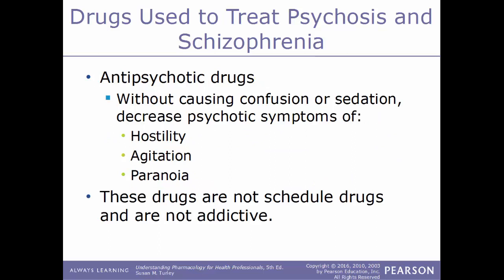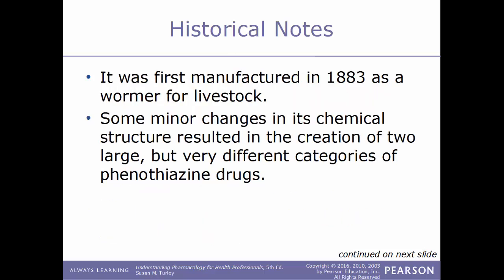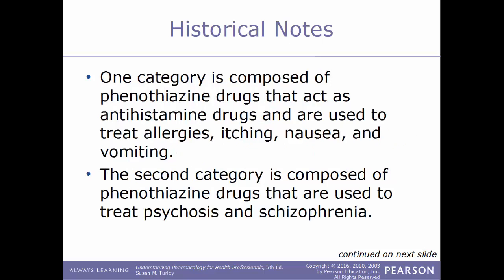Antipsychotic drugs decrease psychotic symptoms of hostility, agitation, and paranoia without causing confusion or sedation. These drugs are not scheduled and are not addictive. Prior to modern antipsychotics, barbiturate drugs were used to sedate agitated and psychotic patients. These have been replaced by the phenothiazine group of antipsychotic drugs. Phenothiazine was the original parent drug — first manufactured in 1883 as a wormer for livestock. Minor changes in its chemical structure resulted in two large but very different categories of phenothiazine drugs.